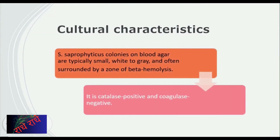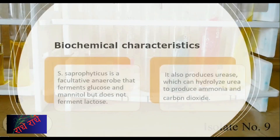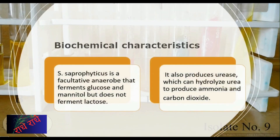Staphylococcus saprophyticus is a bacterial species found in the environment that can cause urinary tract infections. Colonies on blood agar are typically small, white to gray, and often surrounded by a zone of beta-hemolysis. Additionally, this species is catalase positive and coagulase negative. It is a facultative anaerobe, able to survive without oxygen. It ferments glucose and mannitol and hydrolyzes urea, releasing ammonia and carbon dioxide as byproducts. Its biochemical characteristics are key for its growth and development.